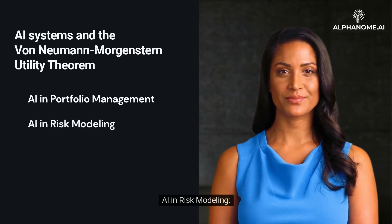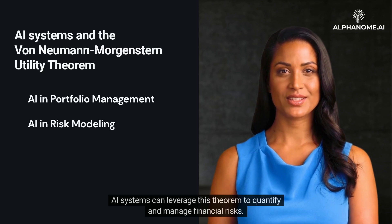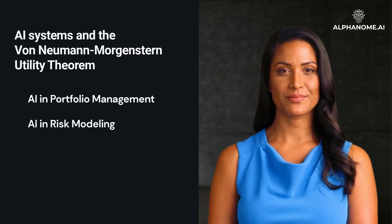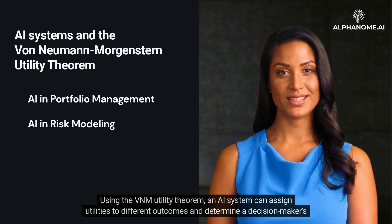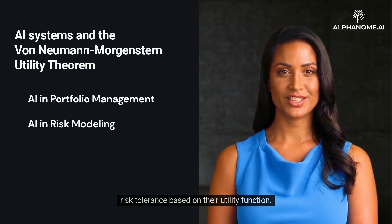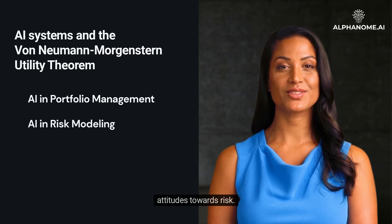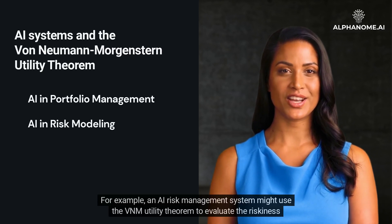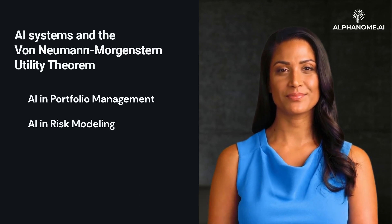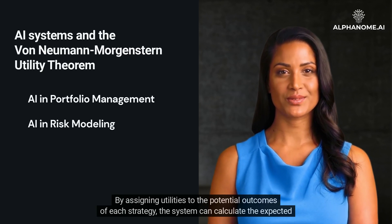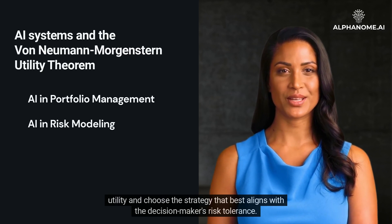AI in Risk Modeling: risk modeling is another area where the VNM Utility Theorem can be applied. AI systems can leverage the theorem to quantify and manage financial risks by assigning utilities to different outcomes and determining a decision-maker's risk tolerance based on their utility function. For example, an AI risk management system might use the VNM Utility Theorem to evaluate the riskiness of different trading strategies and choose the strategy that best aligns with the decision-maker's risk tolerance.